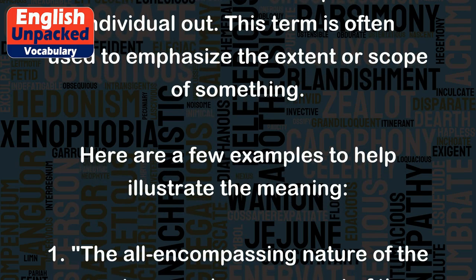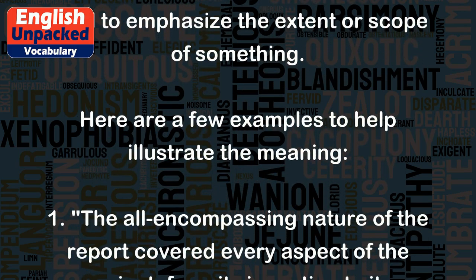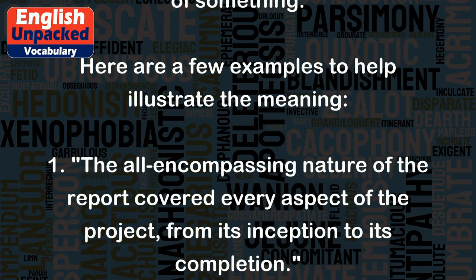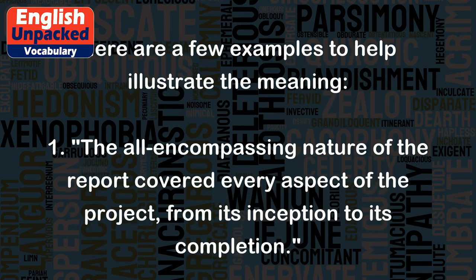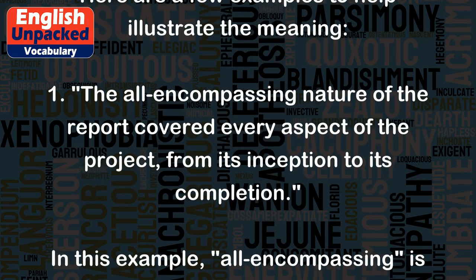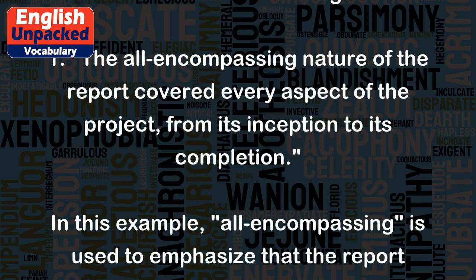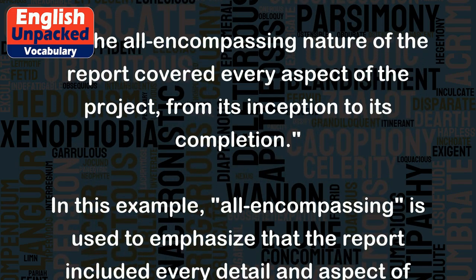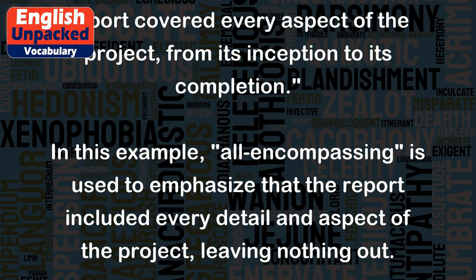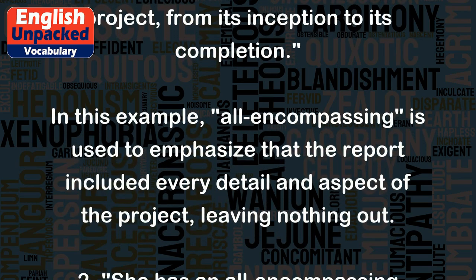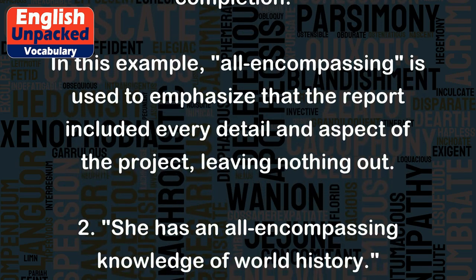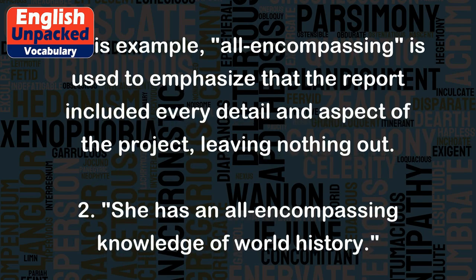Here are a few examples to help illustrate the meaning. Example 1: The all-encompassing nature of the report covered every aspect of the project, from its inception to its completion. In this example, all-encompassing is used to emphasize that the report included every detail and aspect of the project, leaving nothing out.